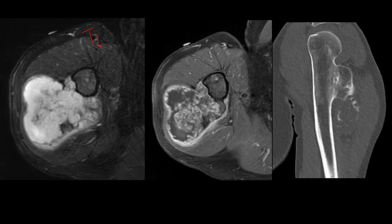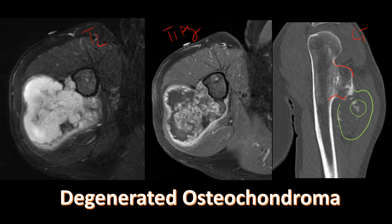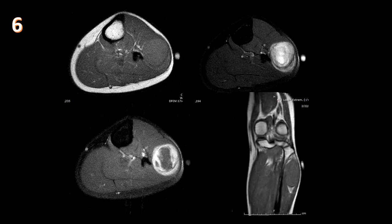MRI in T2, T1 post-contrast, and sagittal CT clearly show the osteochondroma with an enlarged cartilaginous cap containing chondroid matrix — consistent with degeneration to a chondrosarcoma. Post-contrast images show central and peripheral enhancement of the lesion and surrounding tissues, with classic very high T2 signal intensity of the chondroid component. Remember to always keep an eye on that cartilaginous cap.